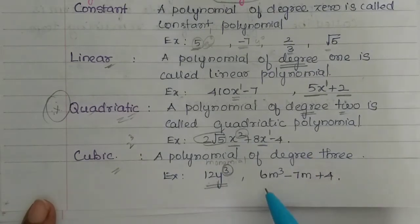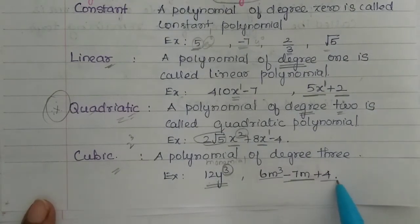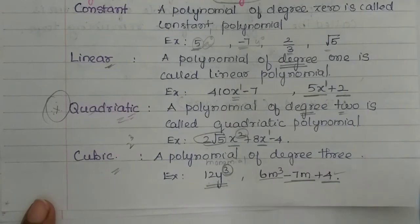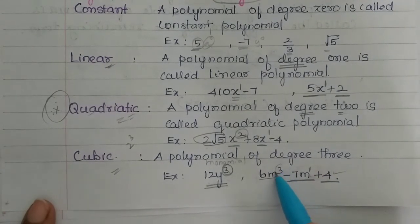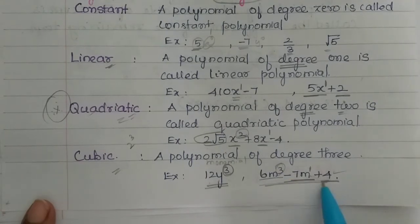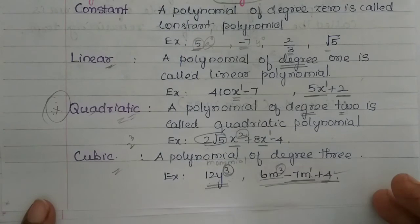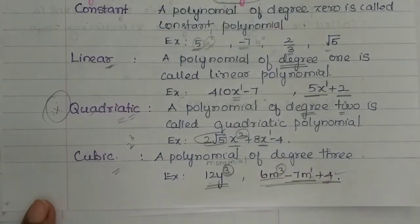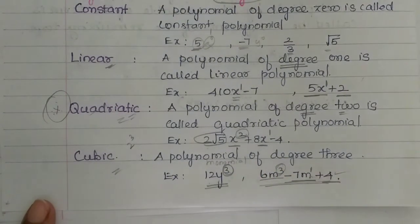For example, 6m³ plus 7m plus 4 — here, 4 is constant (power 0), 7m is power 1, and 6m³ is power 3. The highest power is 3, so this is a cubic polynomial. There is no square term present, but the highest power is degree 3, so it is still a cubic polynomial.